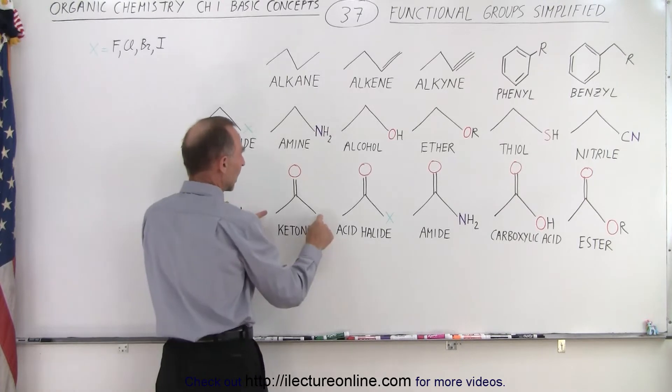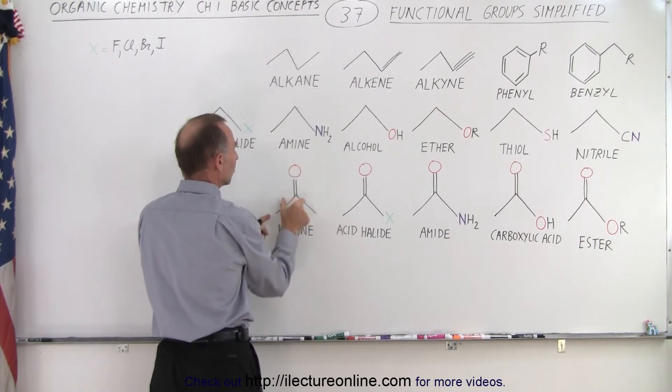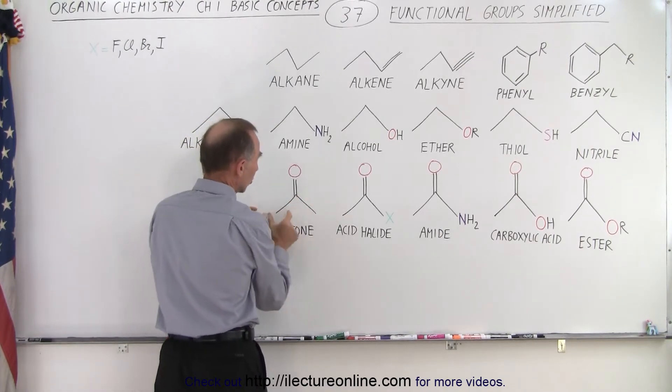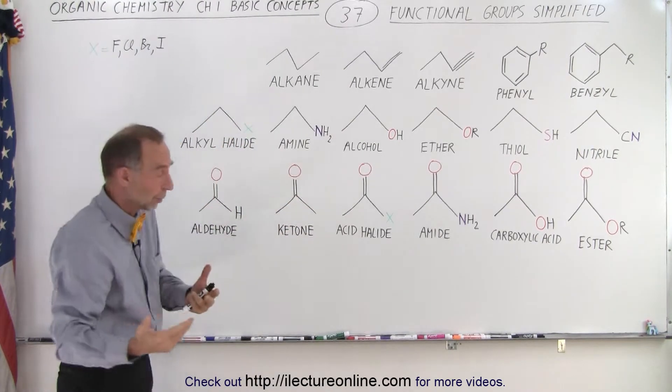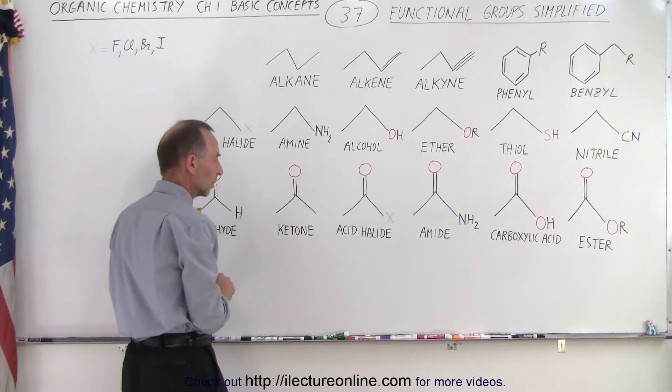With a ketone that's not the case. You'll have carbons on both sides of where the oxygen is attached to this carbon atom right here. So you have a carbon atom, we have two chains of carbons, could be one on each side, could be more than one on each side, doesn't have to be the same. But notice with the ketone we have an oxygen somewhere in the middle.